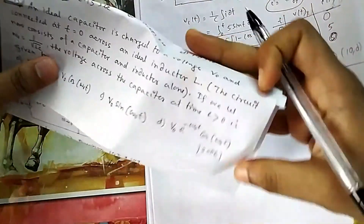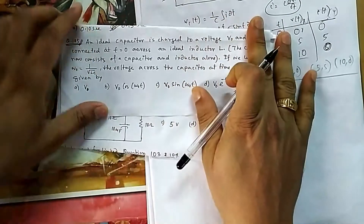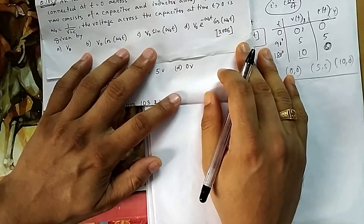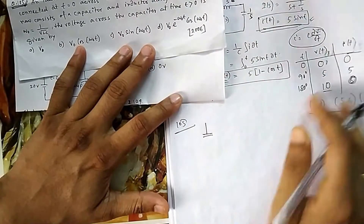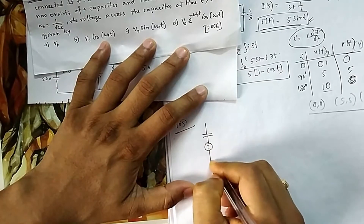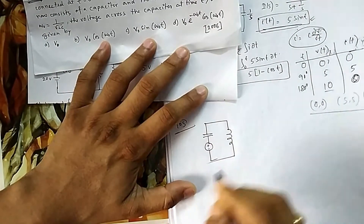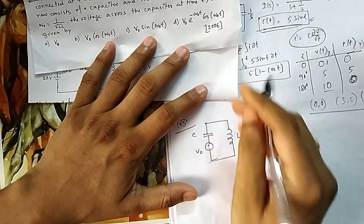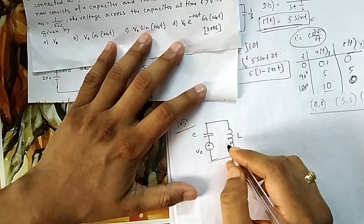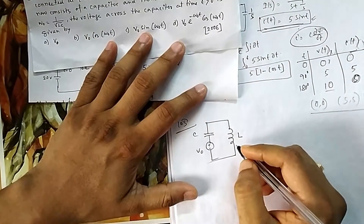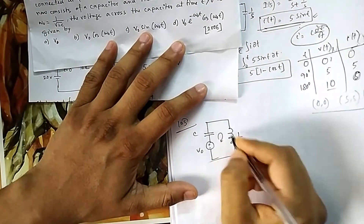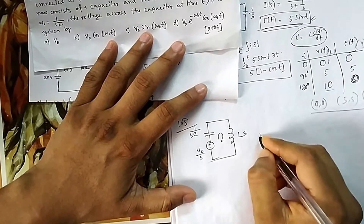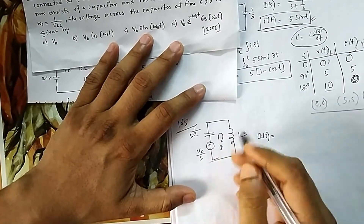For question 105, an ideal capacitor is charged to voltage V₀ and connected at t = 0 across an ideal inductor L. Given ω₀ = 1/√(LC), we need the voltage across the capacitor. The capacitor has initial voltage V₀ (series voltage source in the Laplace model), connected in series with inductor L. This is an LC oscillatory circuit.